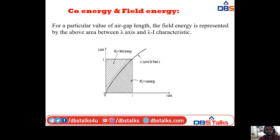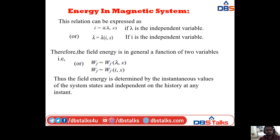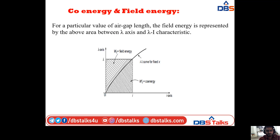Coming to the co-energy and field energy — for a particular value of the air gap length, the field energy is represented by the area between the λ axis and the λ-I characteristics.